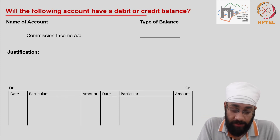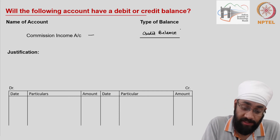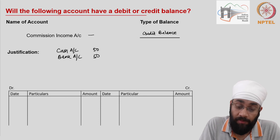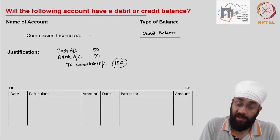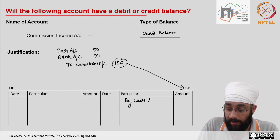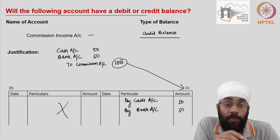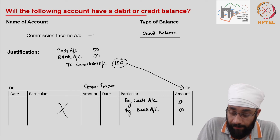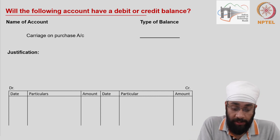Commission income is an income, and all incomes have a credit balance. Whenever you have an income you are receiving it — either in cash or in bank. For example, 50 received in cash and 50 through bank: you credit commission income account for 100. In the commission income account you go to the credit side and write 'by cash account' 50 and 'by bank account' 50. You will never have a posting on the debit side of an income account, so it always has a credit balance.